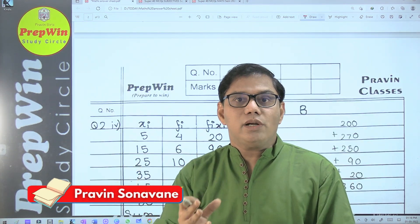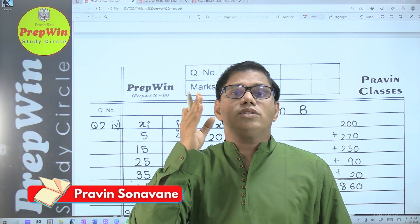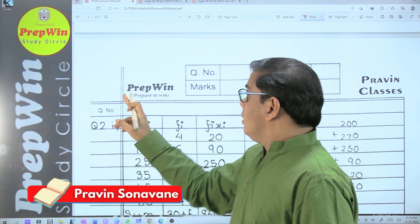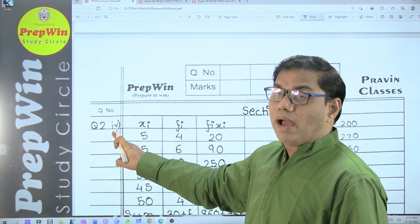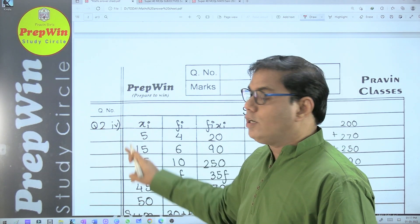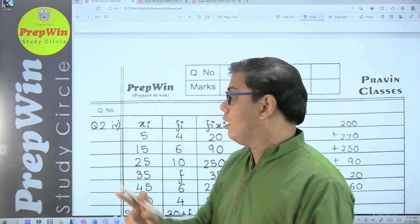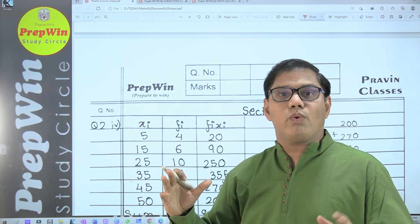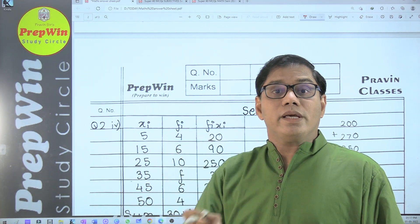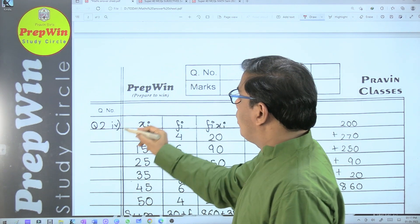Every question in the question paper has been given a number and you have to use the same number. If you have solved the fourth question first, then write question number four. I have seen many times students write one, two, three, four. That is absolutely a wrong method. You have to write the same question number which is printed in your question paper.